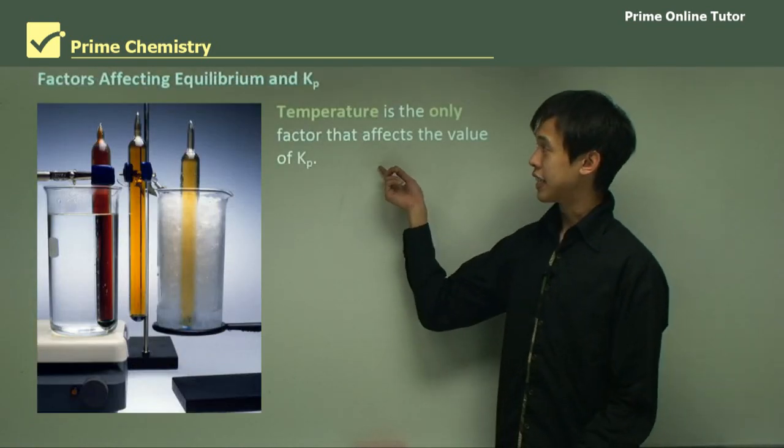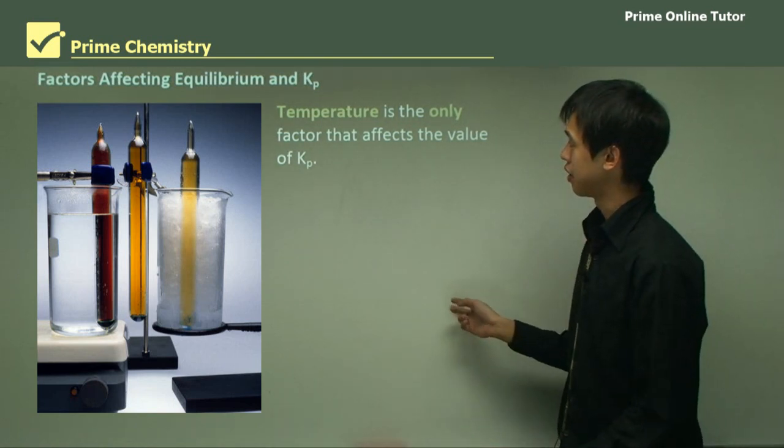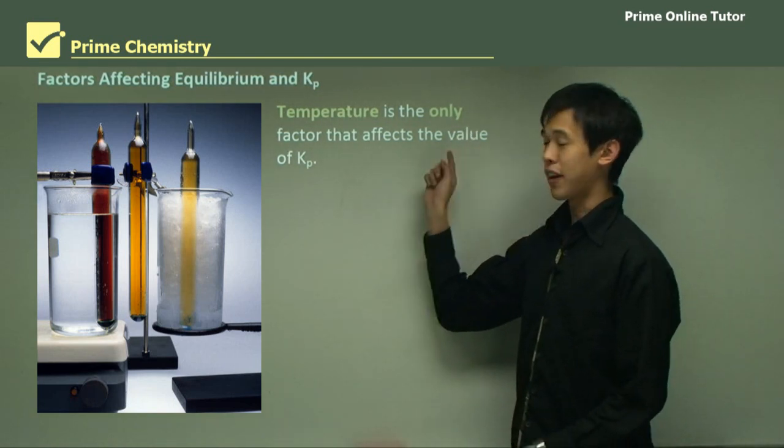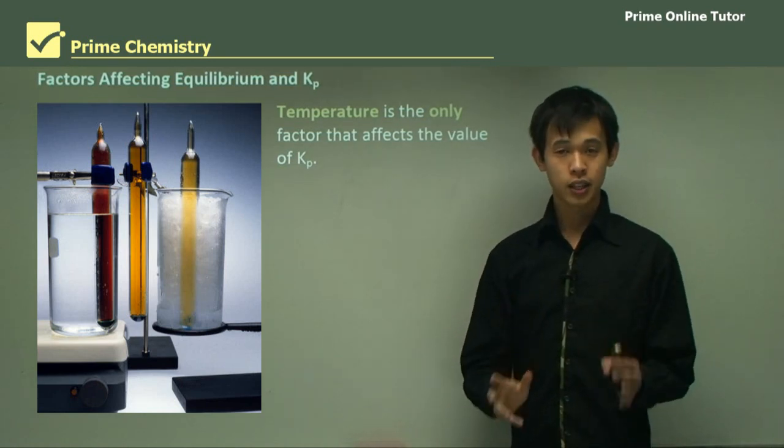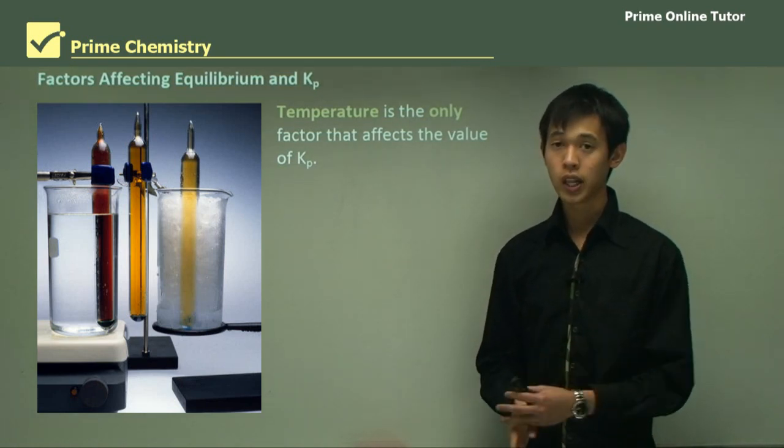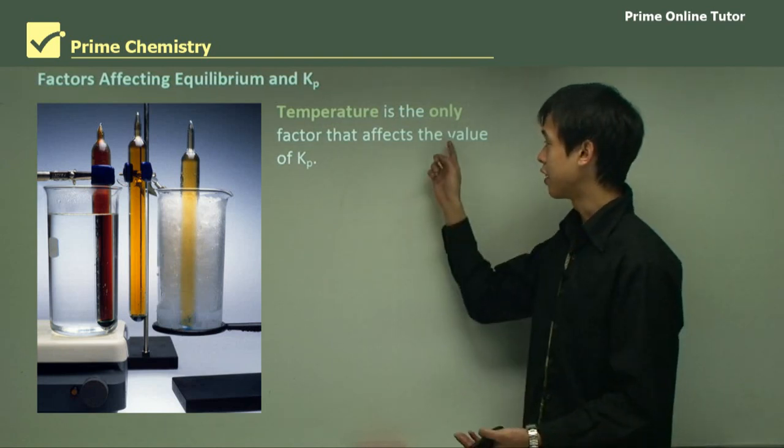So factors affecting equilibrium and Kp, the equilibrium constant. Temperature is the only factor that affects Kp. So that's the first thing that we need to know. Temperature is the only thing that affects the value of this Kp.